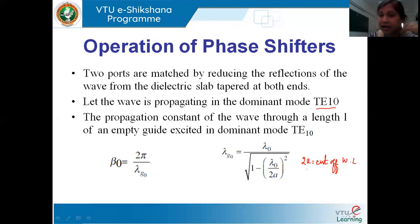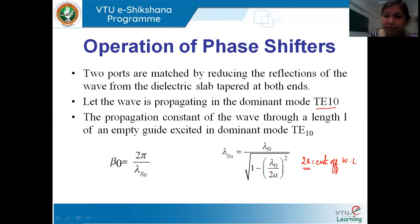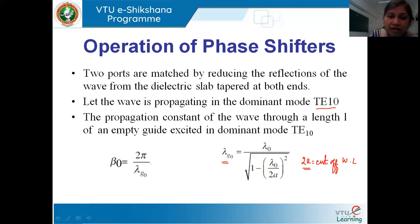The dominant mode TE10 has an associated cutoff wavelength of 2a. When we change the dielectric medium and its permittivity εr, the guided wavelength becomes λg = λ₀ / √(εr − (λ₀/2a)²). Since the phase constant β = 2π/λ, when λ changes, the phase constant obviously changes. That is what happens when the wave propagates through a dielectric medium — the phase constant changes, and consequently there is a change in phase.